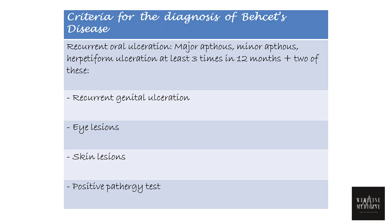Diagnosis of Behcet's disease is made upon clinical signs and symptoms based on criteria which confirms the presence of Behcet's disease with recurrent oral and genital ulceration, along with at least two of these four conditions: recurrent genital ulceration, eye lesion, skin lesion, or a positive pathergy test.